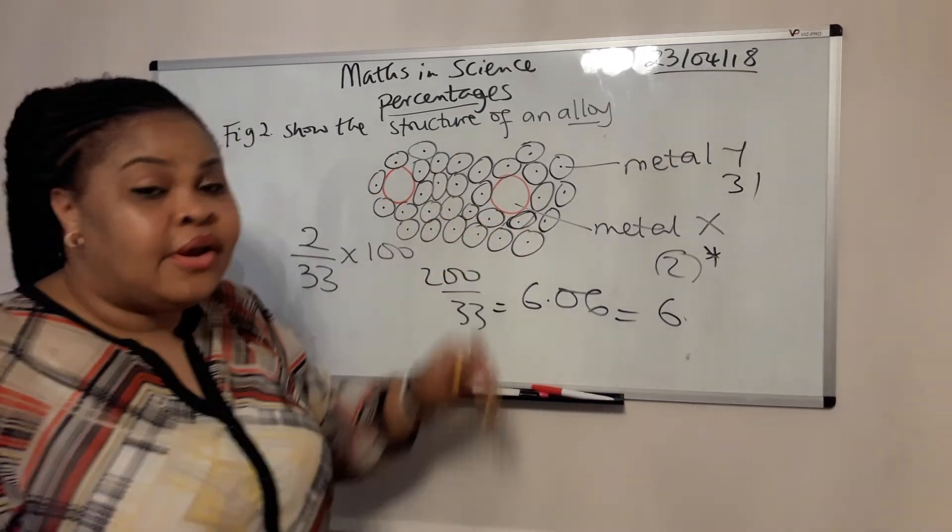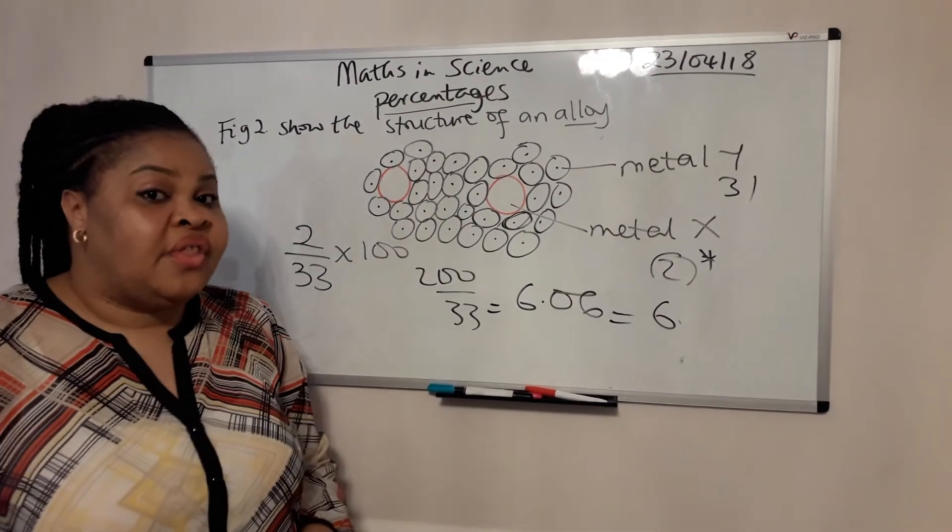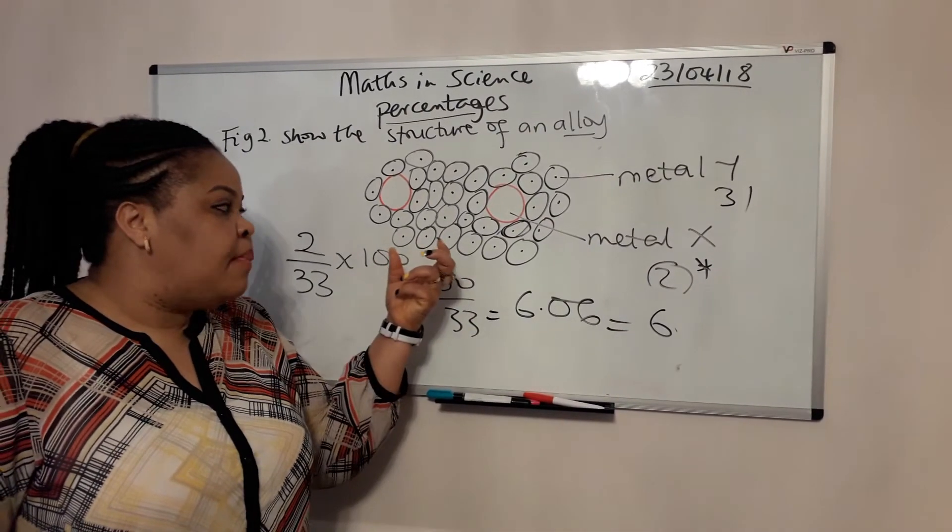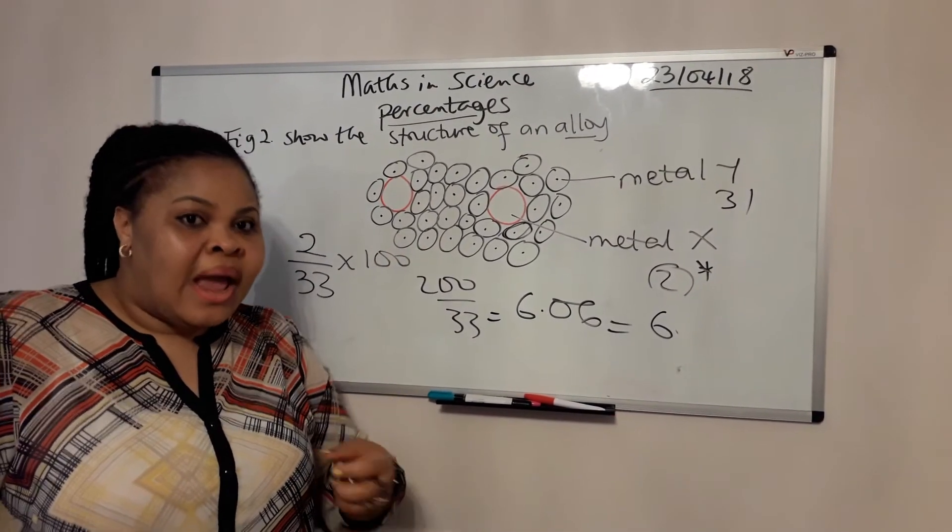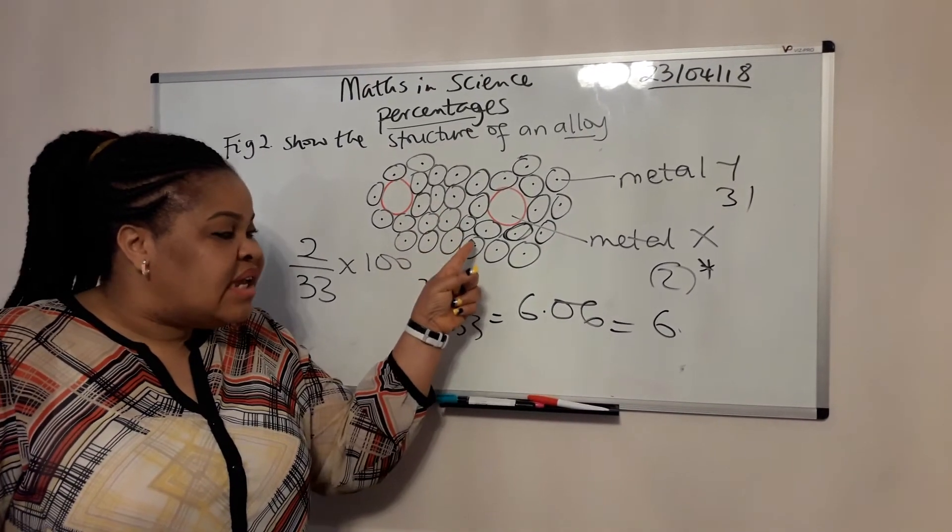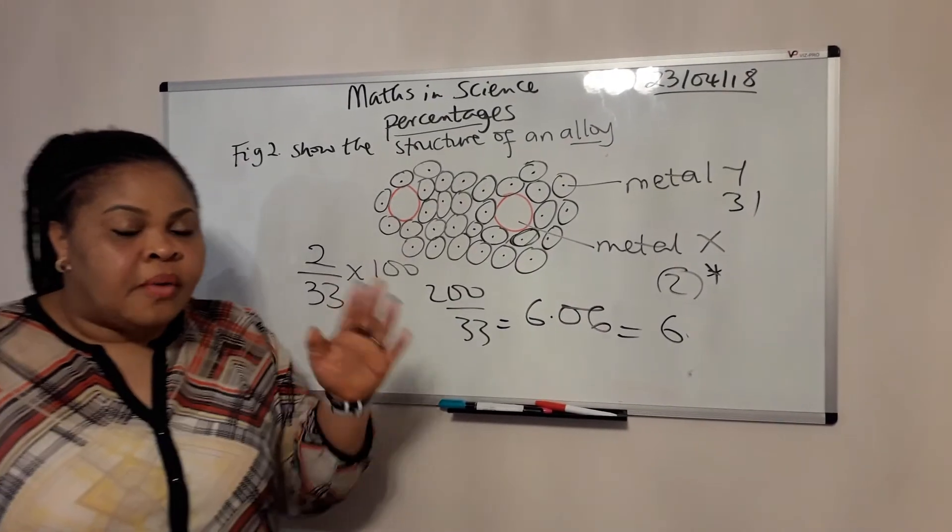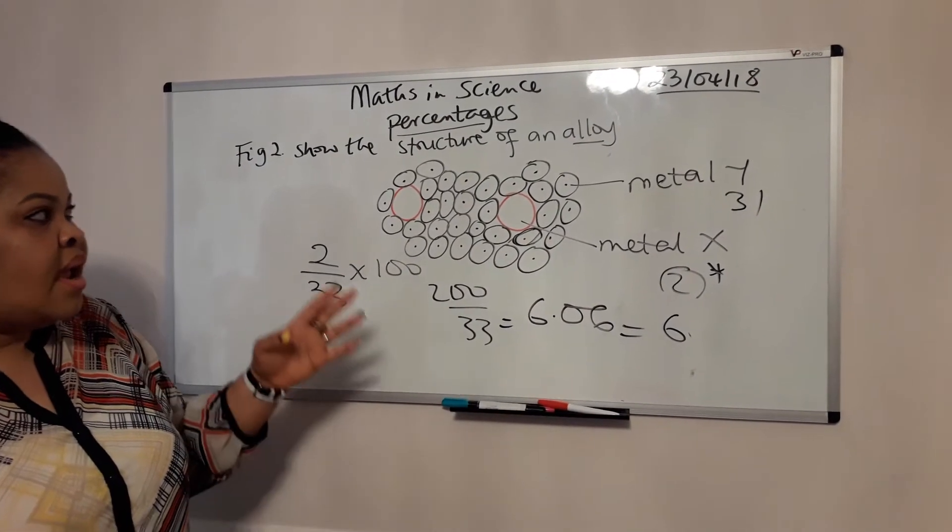It therefore means that it will reduce the ability of metal Y atoms to slide over each other. So it will stop it from sliding over each other. That way it would keep it in place or in position and make it a stronger metal, because the sizes of the metal that have been mixed into it and the original metal are different.